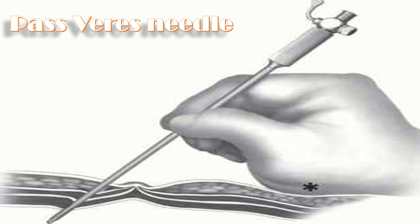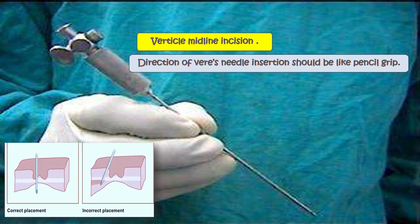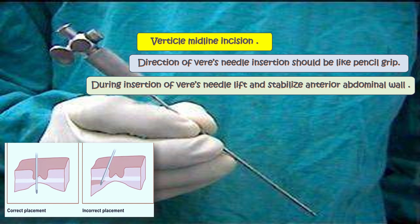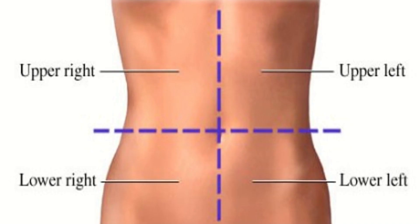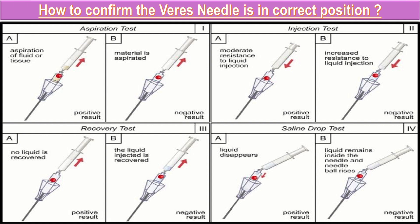Pass the Veress needle through the inferior border of the umbilicus to create pneumoperitoneum with carbon dioxide. A vertical midline incision from the base of the umbilicus, long enough to accommodate the trocar and cannula, is given. Direction of Veress needle insertion should be like a pencil grip — first vertical and then toward the hollow of the sacrum. During insertion, lift and stabilize the anterior abdominal wall, and palpate the abdomen to check for any masses.